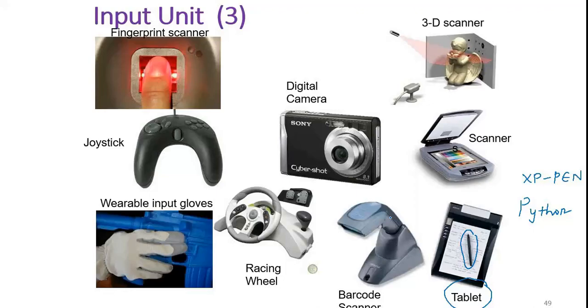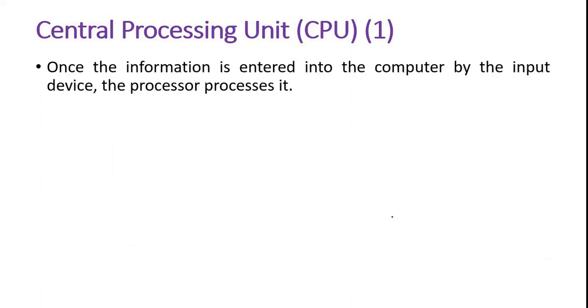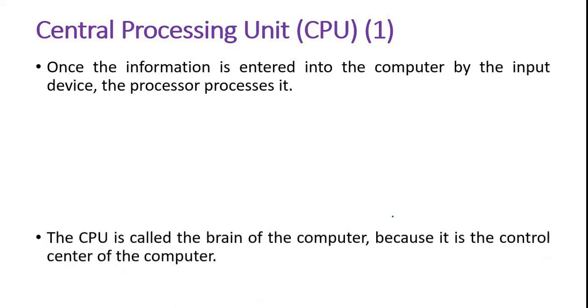So far, whatever we have discussed are the examples of input devices. Now we will go for the processing part in the information processing cycle. These input devices feed the input signal to the computer and convert the input signal into binary form. Now we have binary data, and we need to process it, so we have the CPU — central processing unit.